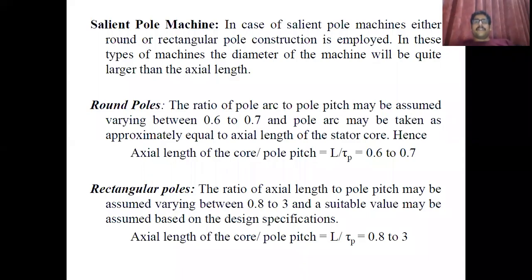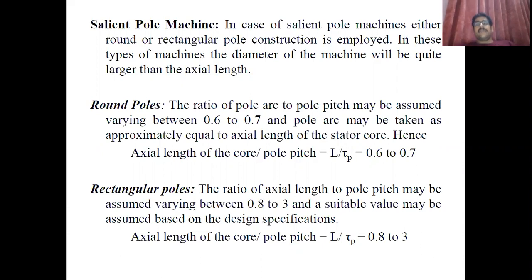Good evening students. This video is basically the continuation of the previous video where we discussed the output equation of a synchronous machine and on which factors it depends. In this video we are trying to understand how, after getting the equation in the form of product of diameter and core length, these two values can be separated from each other.